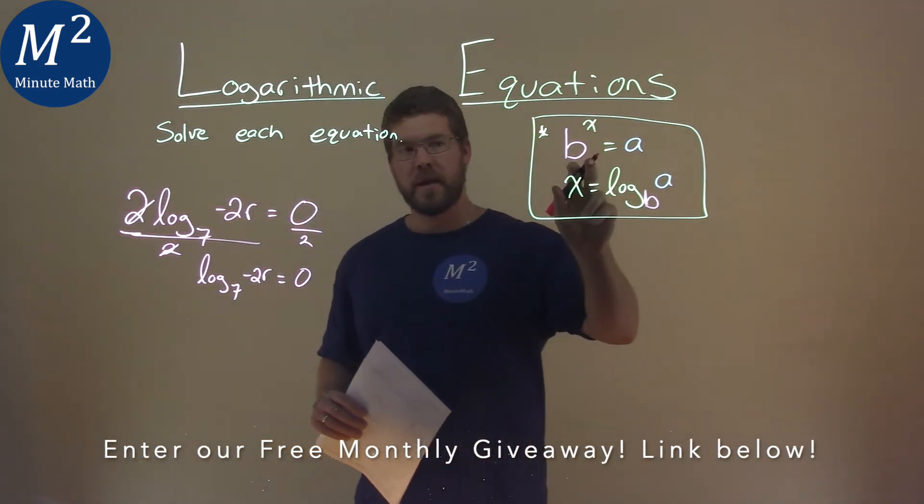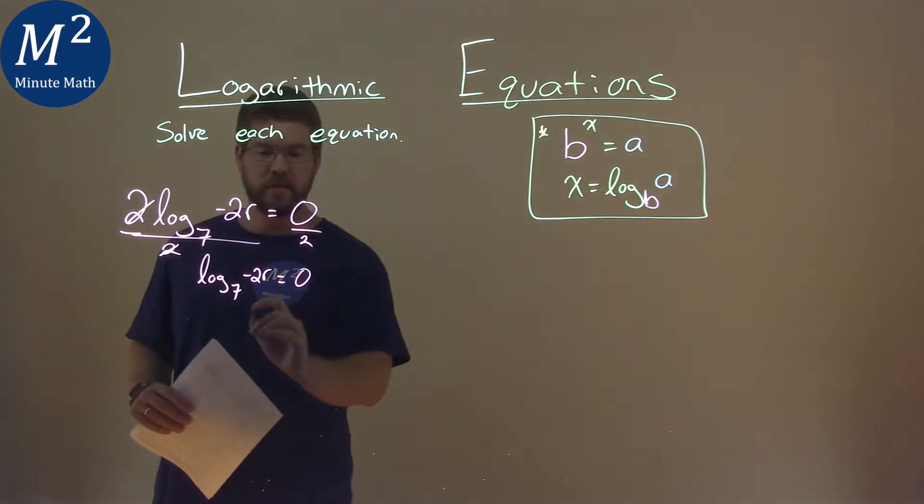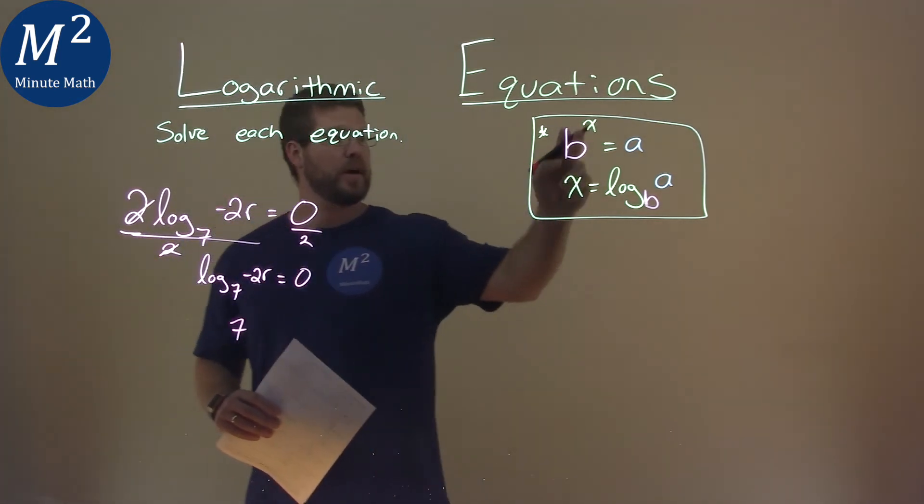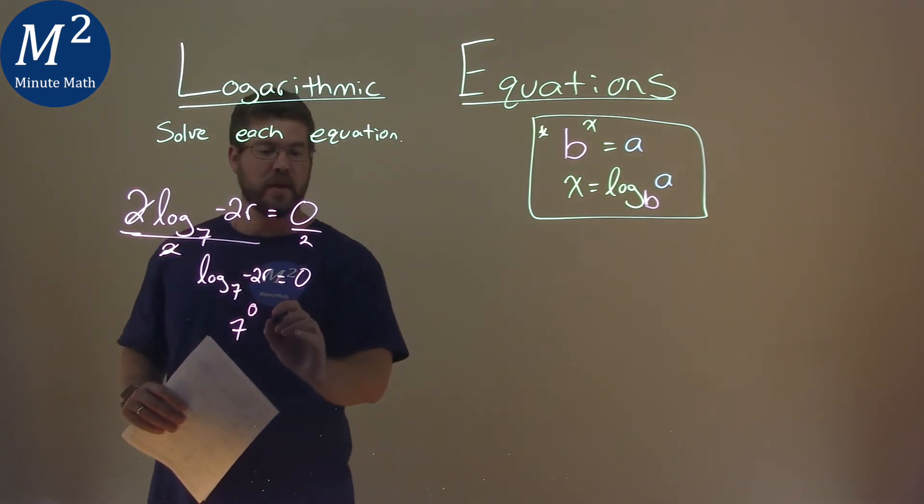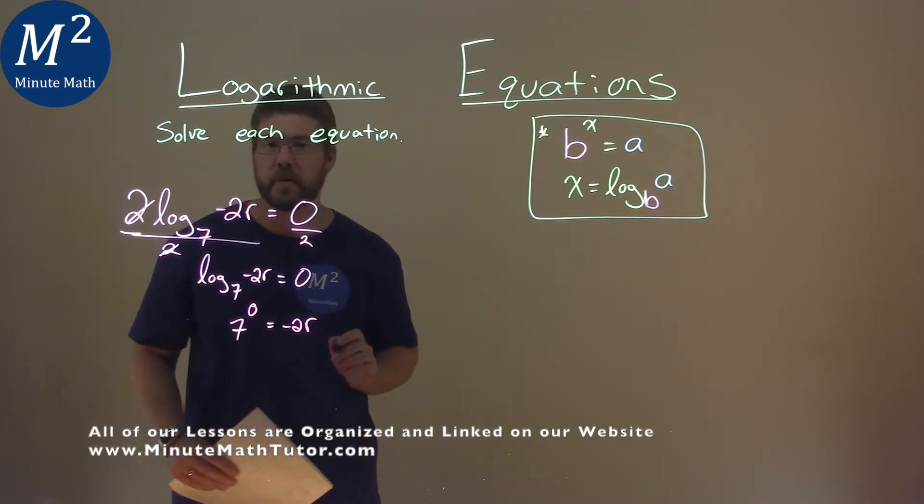We can rewrite that to be this top part. So our base being 7, we can say 7 to the x value, which we see here is 0, it lines up. So 7 to the 0 is equal to this inside part, which is negative 2r.